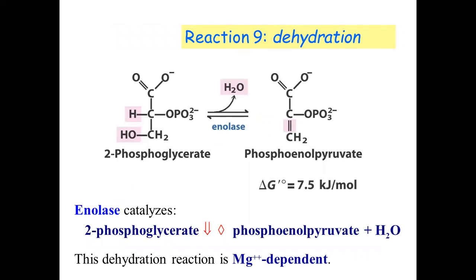Reaction number nine is dehydration. In the dehydration reaction the enzyme involved is enolase. This reaction is magnesium-dependent.